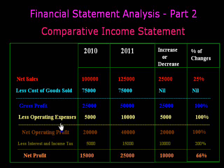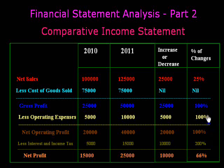Before making any decision regarding our profits, we examine our operating expenses — meaning administrative expenses, selling expenses, distribution expenses, and office expenses. In 2010, our operating expenses were five thousand, but due to increasing expenses they became ten thousand. This five thousand increase represents a one hundred percent increase in operating expenses, so our net operating profit also shows a one hundred percent increase. Less interest and income tax: in 2010 we paid five thousand income tax, and in 2011 we also paid five thousand income tax.